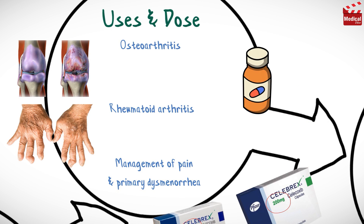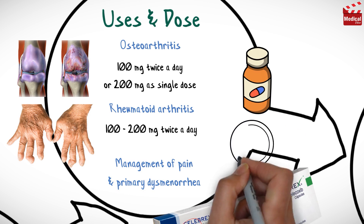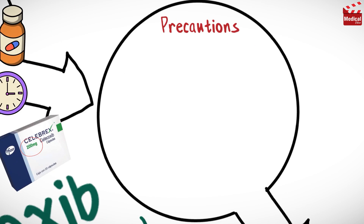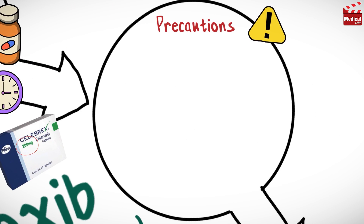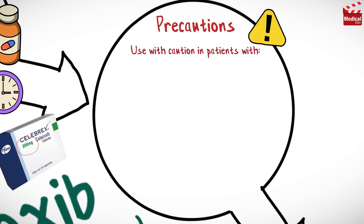The usual dose of Silicoxib for osteoarthritis in adults is 100 milligrams twice a day or 200 milligrams as a single dose. For rheumatoid arthritis in adults, the dose is 100 to 200 milligrams twice a day.